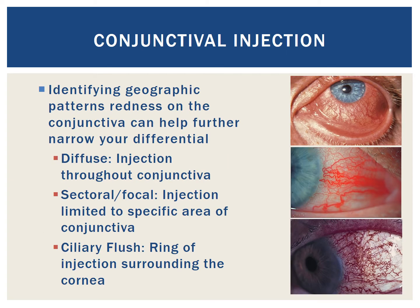Conjunctival injection can be further characterized by the geographic pattern of the redness. The top image shows diffuse injection throughout the entire conjunctiva. The middle image demonstrates sectoral or focal injection, which is injection limited to a specific area of conjunctiva. The lower image shows ciliary flush, a ring of injection of the conjunctival blood vessels surrounding the cornea. Typically, ciliary flush is seen with inflammation of the iris or corneal insult and is not typically seen in run-of-the-mill conjunctivitis. Understanding these patterns can help narrow your differential.